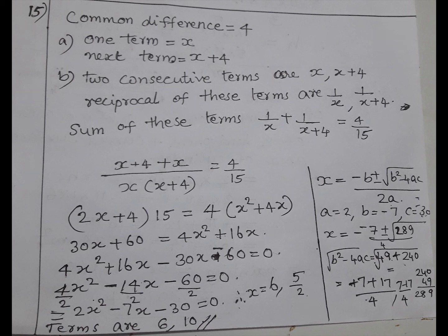Next, sum of reciprocals of 2 consecutive terms of the sequence is 4 by 15. Two consecutive terms. One term x, next is x plus 4. This is reciprocal. This is 1 by x plus 1 by x plus 4.